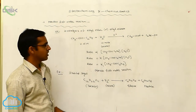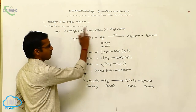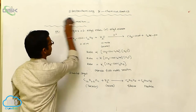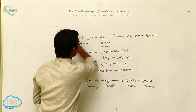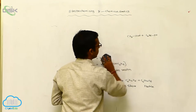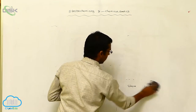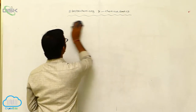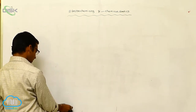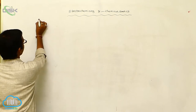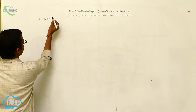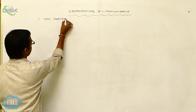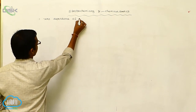Examples of pseudo first order reactions are the hydrolysis of methyl ester or ethyl ester, and another is inverted sugar. After the completion of pseudo first order reaction, we discussed the factors affecting the rate of reaction. The first factor is temperature — temperature dependence of the rate of reaction.